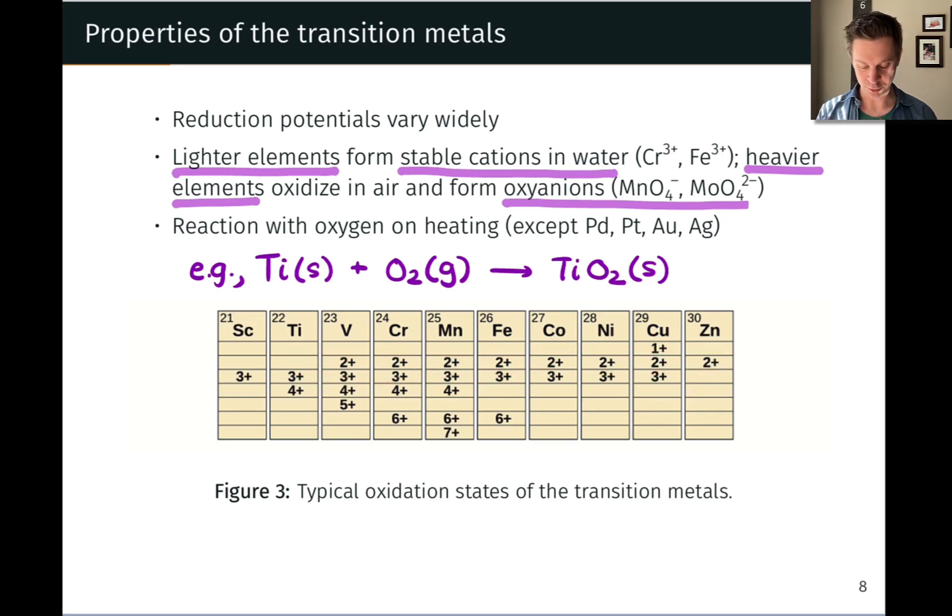Starting at vanadium and going all the way to zinc, this corresponds to the loss of two 4s electrons. The two 4s electrons are lost and the remaining d electrons just hang out in the d orbitals in those cations.